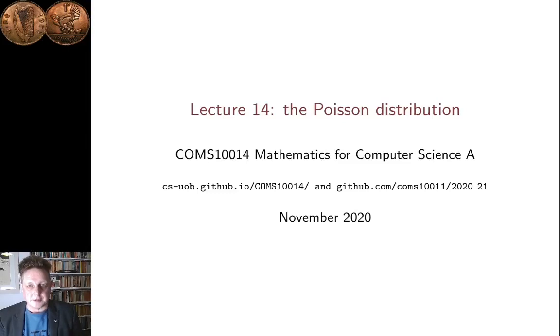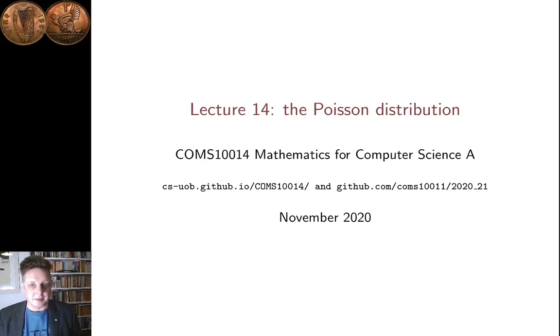Hi, I'm Conor Houghton. This is lecture 14 in the probability and combinatorics section of our unit Mathematics for Computer Science A. This lecture will be about the Poisson distribution.